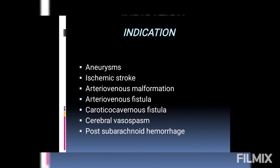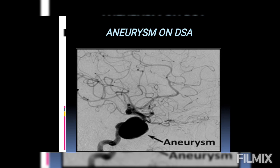Then we have post-subarachnoid hemorrhage. When we have an aneurysm — which we discussed is a bulge — that bulge can ultimately rupture and bleed. That is what we call subarachnoid hemorrhage. Here you can see an image of an aneurysm, which appears as a kind of bulge in the blood vessel.